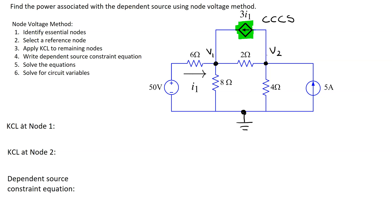For systematic application of the node voltage method, assume all branch currents are flowing away from the node. Each of these nodes has four branch currents, and now we can write the KCL equations at these nodes. First, looking at node one, this branch current through the 6 ohm resistor — we can use Ohm's law to write an expression for this.